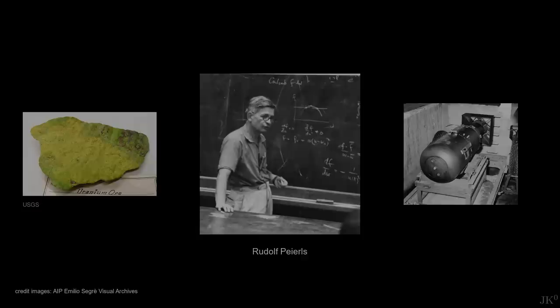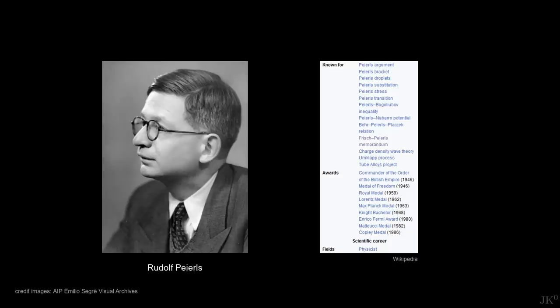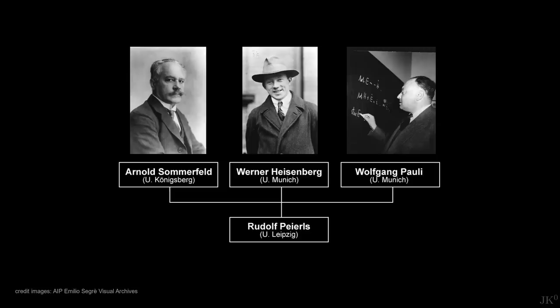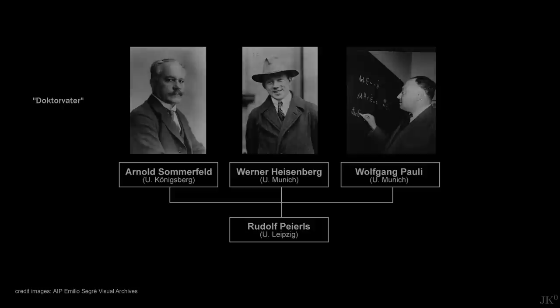Peierls is one of those theoretical physicists that made numerous discoveries and has so many things after him that it is hard to describe his main contribution. Most of his work was the successful application of quantum mechanics to electrons in metals. He was trained by some of the greatest physicists of his time. He had not one PhD advisor, or Doktorvater as they call it in Germany, but three. Arnold Sommerfeld and two of his most influential students, Werner Heisenberg and Wolfgang Pauli.